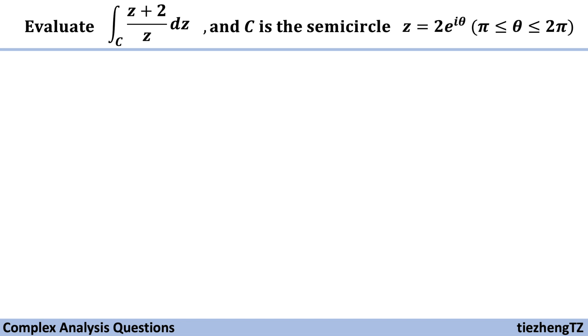This question is to evaluate the integral z plus 2 over z dz on the semicircle z equals 2 times e to the power of i theta, where theta is from pi to 2 pi.